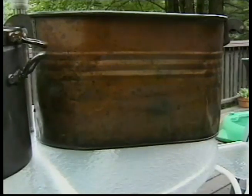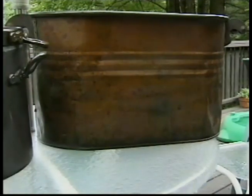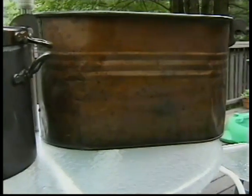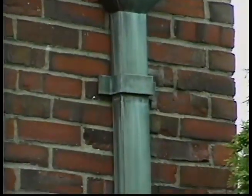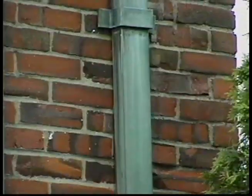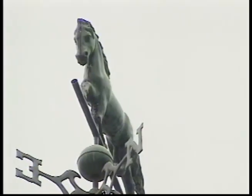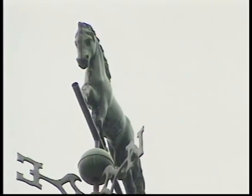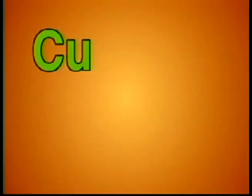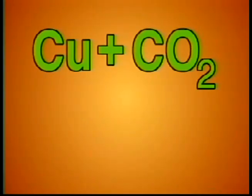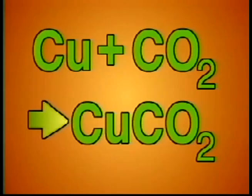Let's take a look at an example involving the element copper, seen here in this bucket. Copper is often used as material for roofing and for downspouts. With time, the shiny copper metal turns green, symbolizing a chemical reaction between the copper and carbon dioxide in the air. The reaction can be symbolized by the chemical equation: Cu + CO2 yields CuCO2.